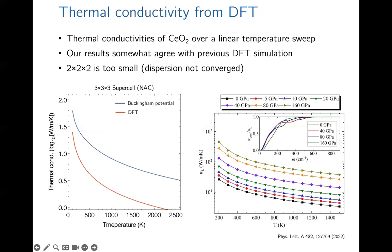We found that predicted thermal conductivities are much lower for DFT, and they seem to be in rough agreement with measured values of the thermal conductivity for Ceria. The plot on the right was prepared using a 2x2x2 supercell, which we know does not have a fully converged dispersion relation, so our results are likely a bit more accurate and we should compare to higher-resolution data in the future. Perhaps more interesting is that the convergence behavior doesn't seem to be the same for DFT and the empirical potential, telling us the anharmonicity physics may differ between the two models — something we'll want to look at more closely.